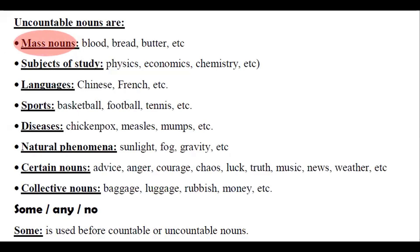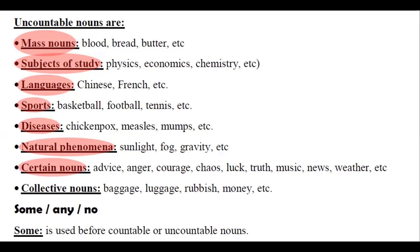Uncountable nouns are mass nouns like blood, bread, butter; subjects of study like physics, economics, chemistry; languages like Chinese, French; sports like basketball, football, and tennis; diseases like chickenpox, measles, mumps; natural phenomena like sunlight, fog, gravity; and certain nouns like advice, anger, courage, chaos, luck, truth, music, news, weather; and collective nouns like baggage, luggage, rubbish, money.